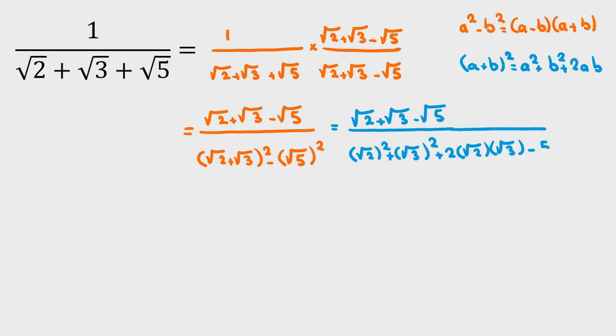Root 5 squared is minus 5. So, if we simplify the numerator, it is root 2 plus root 3 minus root 5. And the denominator will be root 2 squared is 2, root 3 squared is 3 plus 2 root 6 minus 5. So, minus 5, 3, 2 will be cancelled. I have only root 6 in denominator.